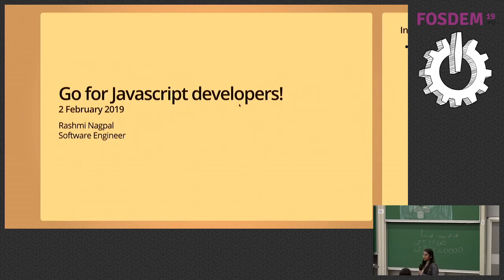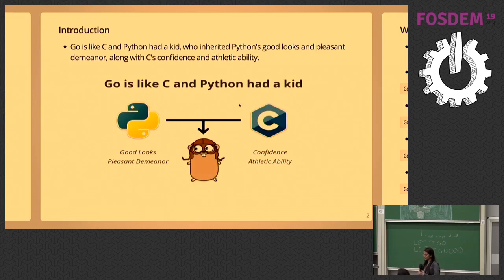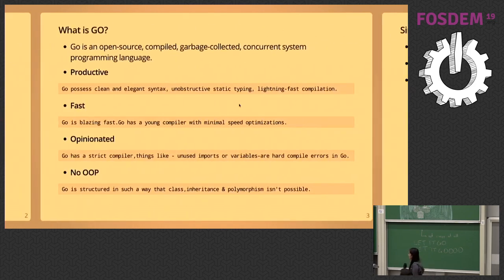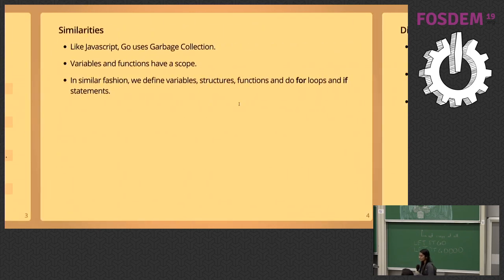Hi everyone, I'm Rashmi and I'm a software engineer based in India. My talk title is 'Go for the JavaScript Developers.' Go is like C and Python as a kid — it possesses the confidence and athletic ability of C and the pleasant manner of Python. Go is an open source, compiled, garbage-collected, concurrent systems programming language which is blazing fast. It has a strict compiler, so things like unused imports and unused variables are hard compile errors in Go, and it has clean and elegant syntax.